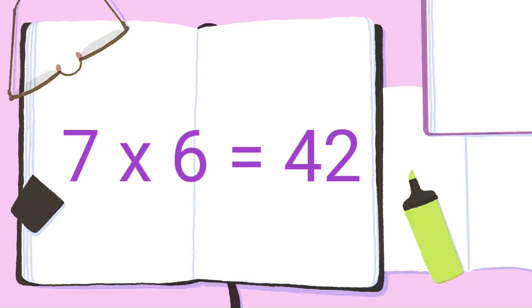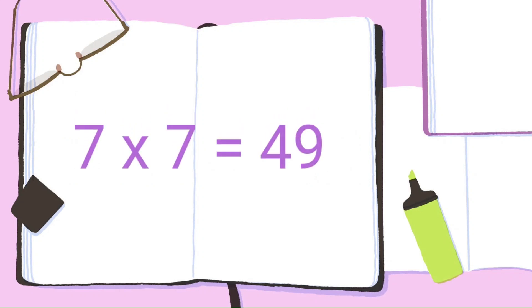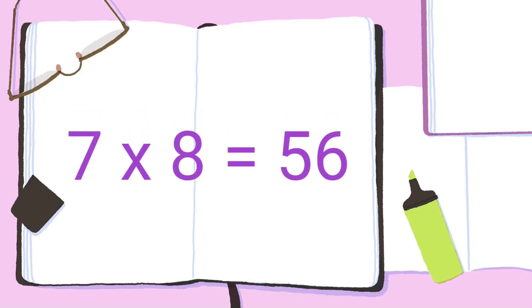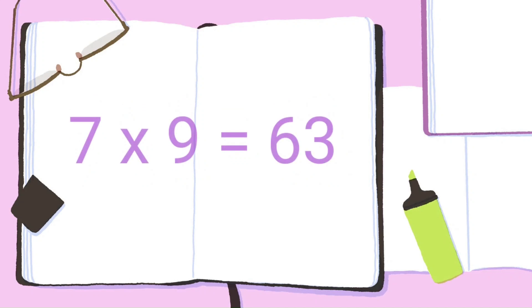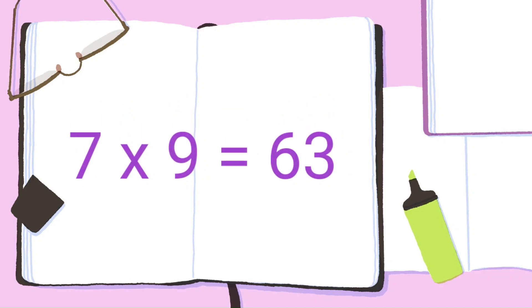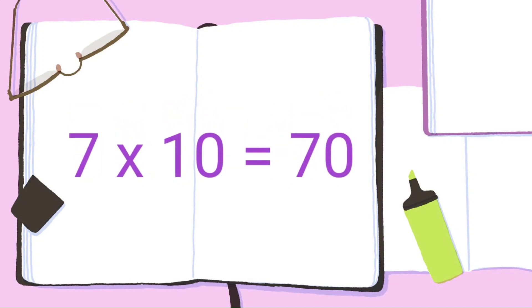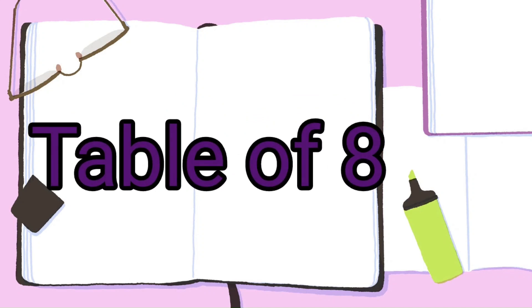7 6's are 42. 7 7's are 49. 7 8's are 56. 7 9's are 63. 7 10's are 70.